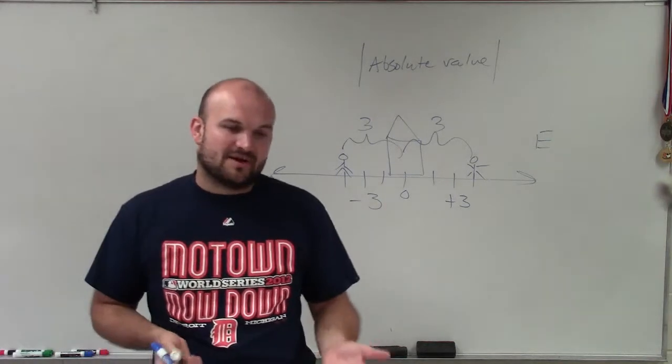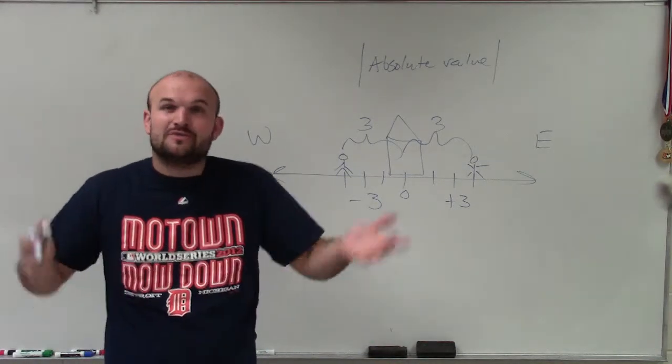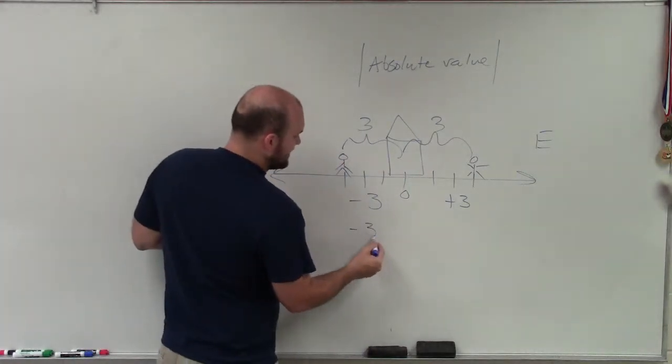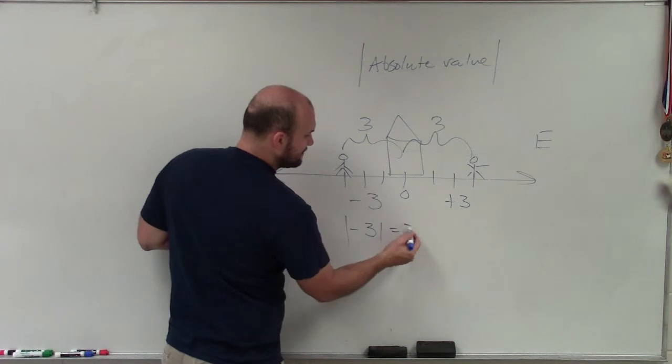But we're not looking at direction when we're talking about absolute value. We're just looking at the absolute distance. What is the distance that both of them would have to travel? So therefore, we'd say absolute value of negative three is three, and the absolute value of three is equal to three.